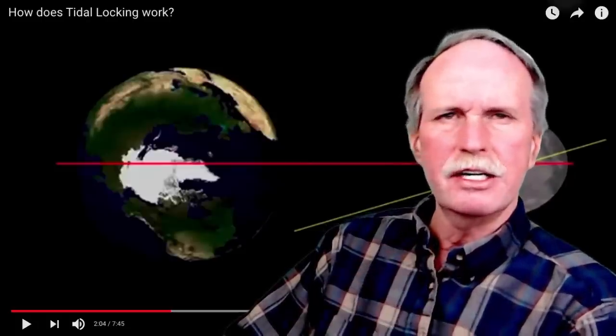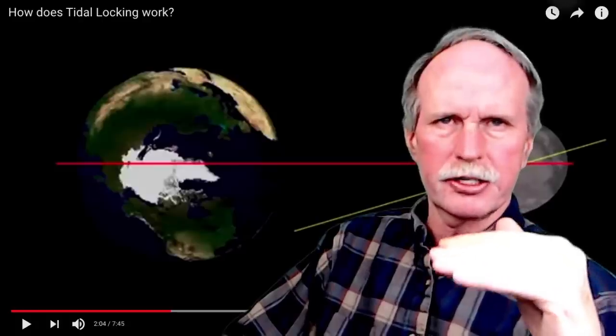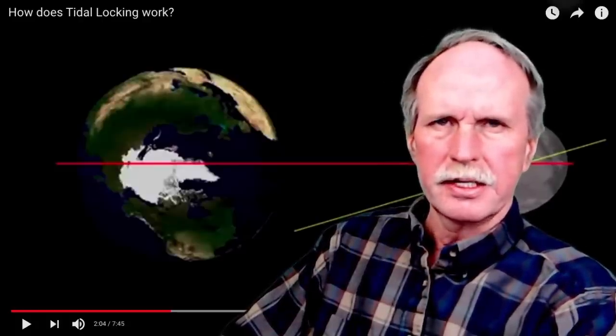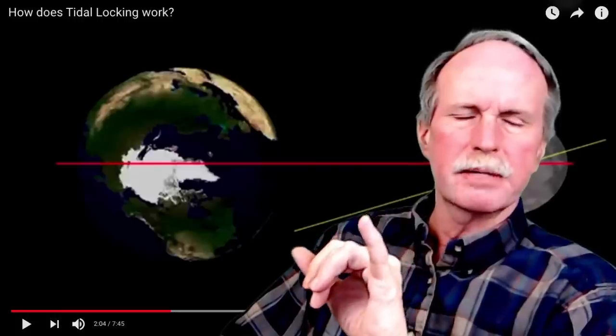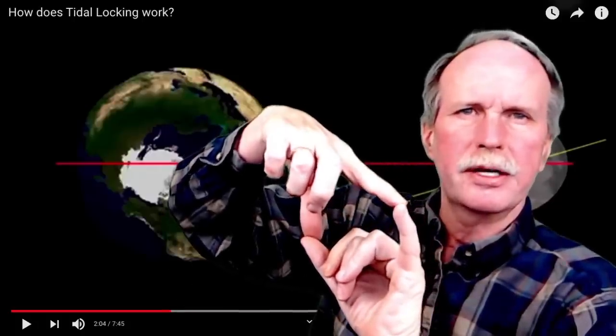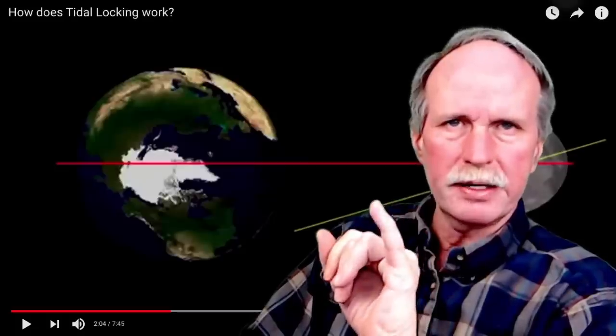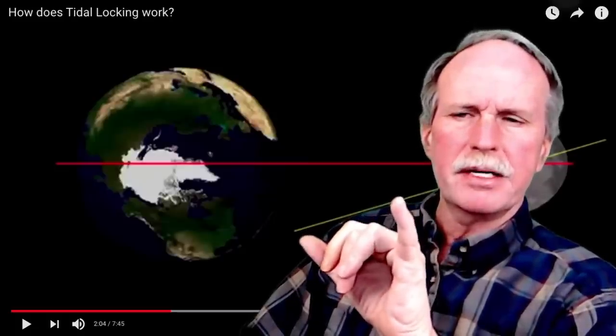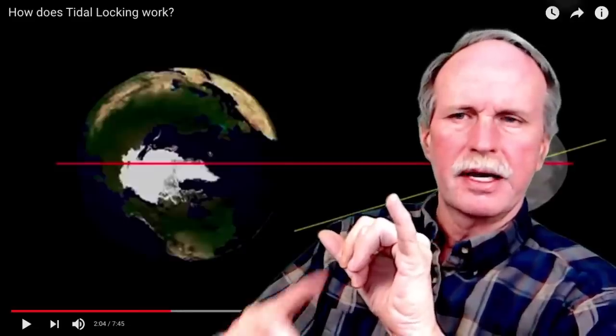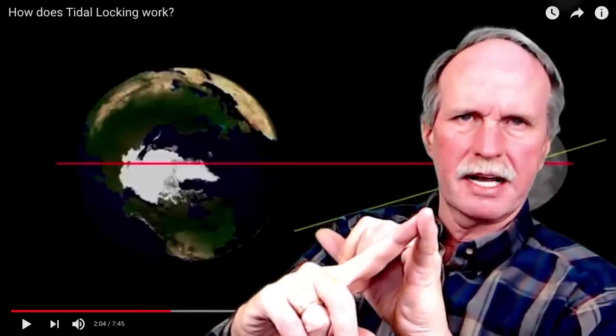And since it's a continuous drag, over time it will slow it down and eventually stop it. Now the second implication of this is, since part of the gravitational attraction between the Earth and the moon is devoted not to holding the Earth to the moon but to bring that yellow line back into alignment with the red line, that means that the moon is less strongly held to the Earth. As a result, it drifts away a little bit and its orbit slows down a little.